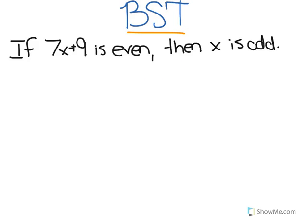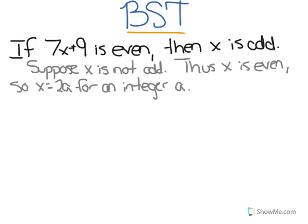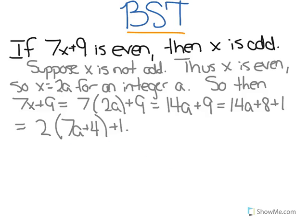But we can also prove this contrapositively. Suppose x is not odd; thus x must then be even, and so x equals 2a for some integer a. We know that x equals 2a because that's the definition of an even number. Just like an odd number was defined as 2a plus 1, where a is an integer, even numbers are defined as x equals 2a. So the even number 4 equals 2 times 2. Then 7x plus 9 must be equivalent to 7 times 2a plus 9, because we've already said that x equals 2a.